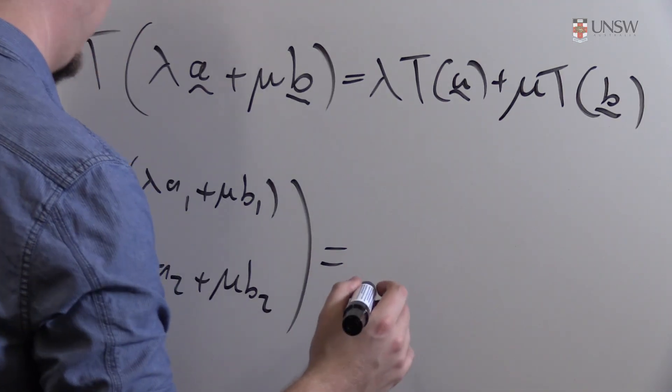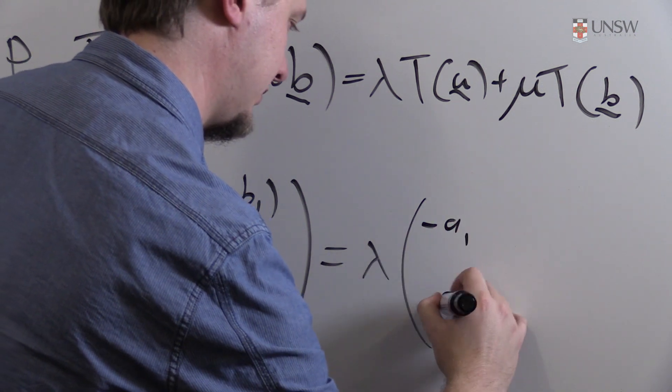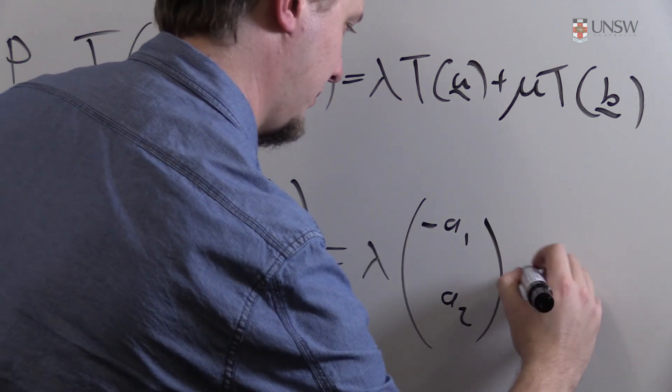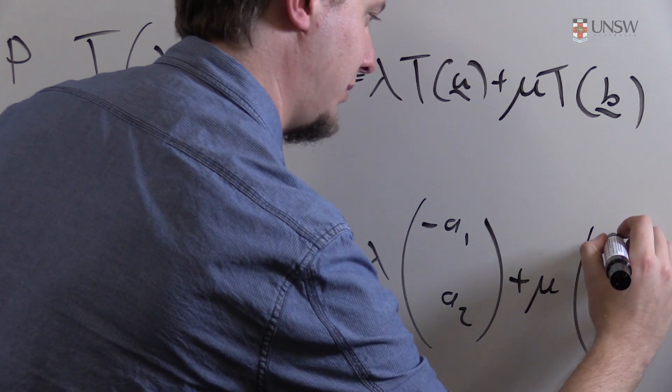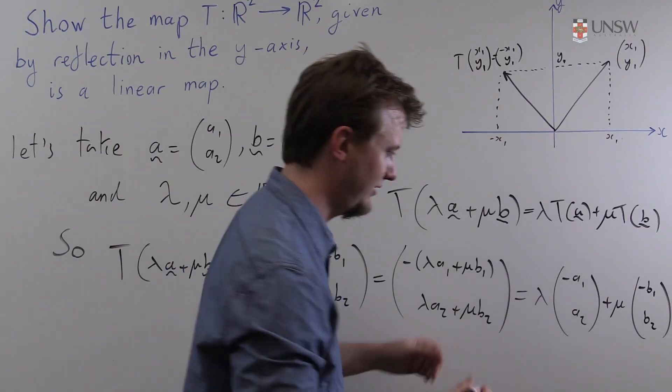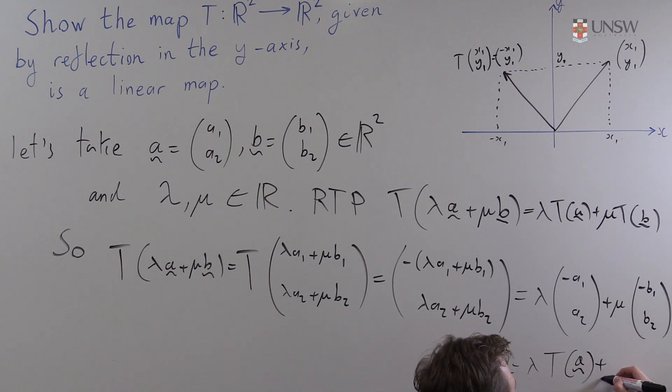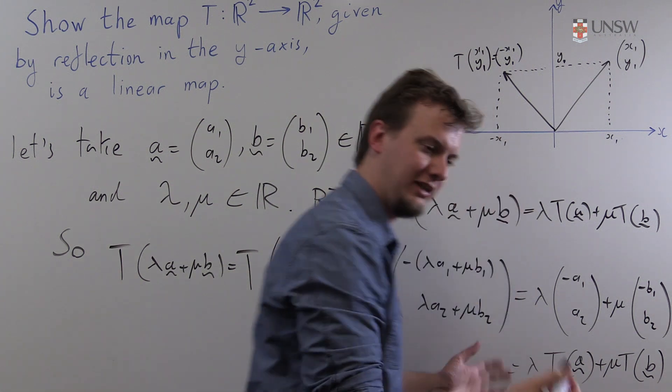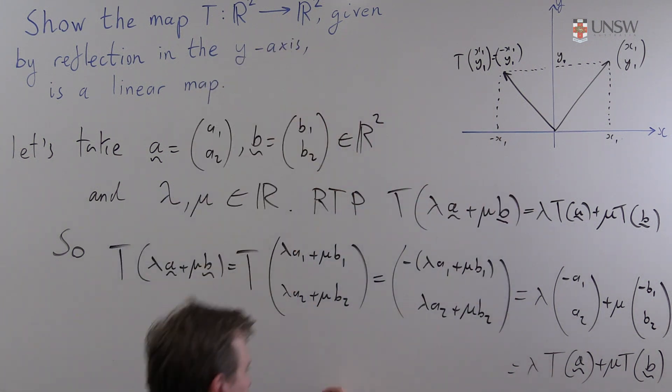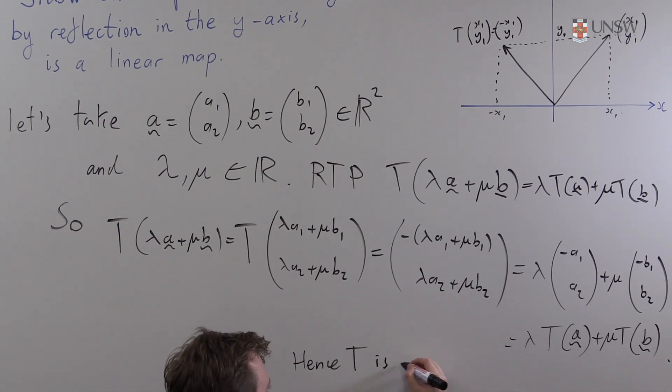And this is equal to λ times (-a₁, a₂) plus μ times (-b₁, b₂). All right and this is just λ times T applied to a plus μ times T applied to b. And this is exactly what we were required to prove. So hence T is a linear map.